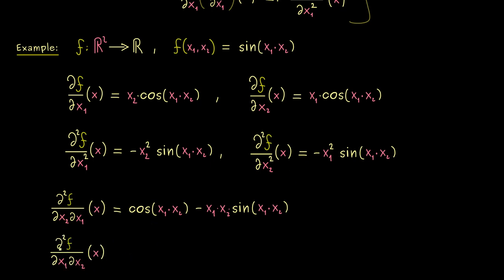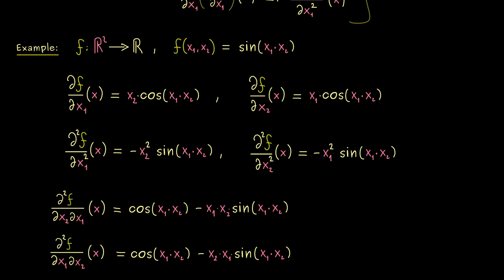Now the question is what happens when we do it in the other order. Taking ∂f/∂x₂ = x₁ · cos(x₁x₂) and differentiating with respect to x₁, the product rule again applies. The first term is again cosine of x₁x₂, and the second term is minus sine with inner derivative x₂, giving −x₁x₂ · sin(x₁x₂). We immediately notice it's the same result as before — so for this function, the order of the mixed second-order partial derivatives did not matter. This is a result from a famous theorem, which will be the topic of the next video. Let's meet there and have a nice day!